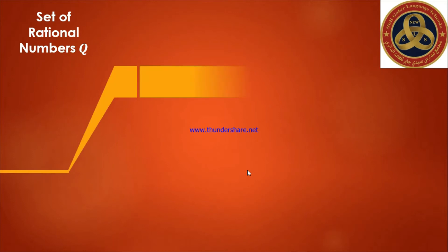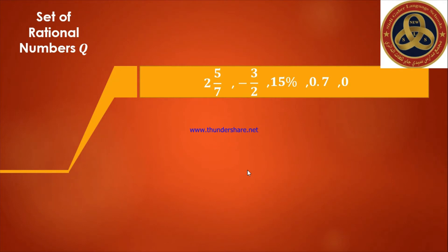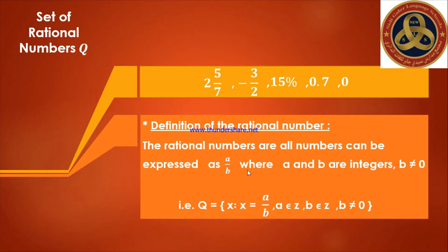In Middle One we will take a new set called the set of rational numbers. Examples include: two and five-sevenths as a mixed number, negative three over two as a fraction, fifteen percent, zero point seven, and zero. The rational numbers are all numbers that can be expressed as a over b, where a and b are integers and b does not equal zero, because the denominator can never equal zero as it would be meaningless.